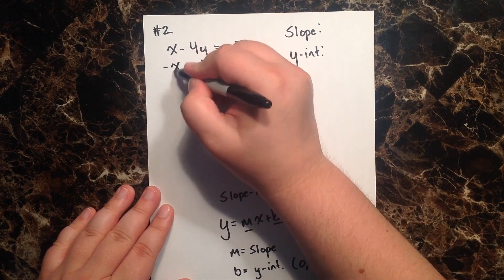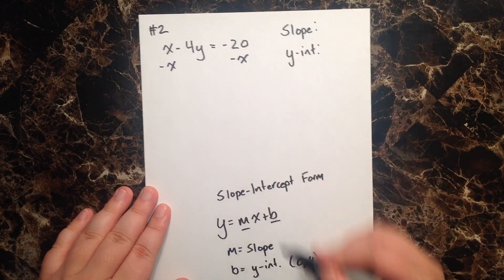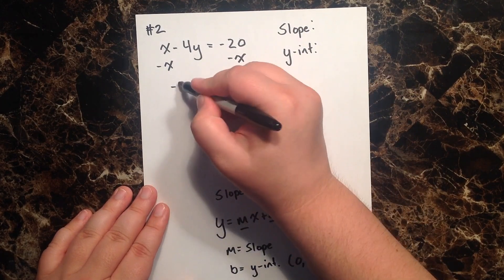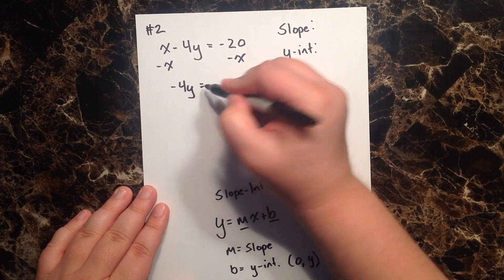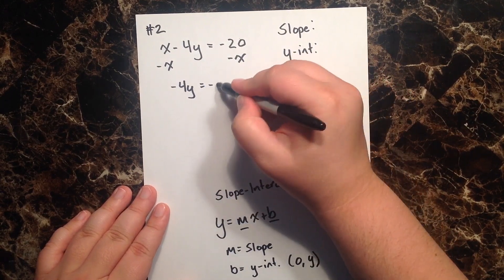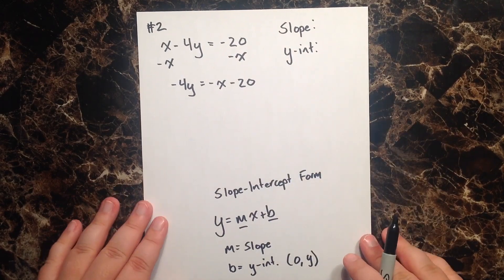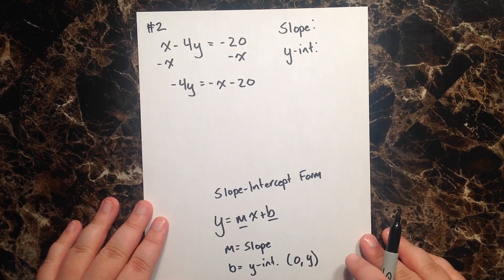So the first thing I'm going to do is subtract x from both sides, and when I do that, I'm left with negative 4y on the left equals negative x minus 20 on the right, and then lastly,